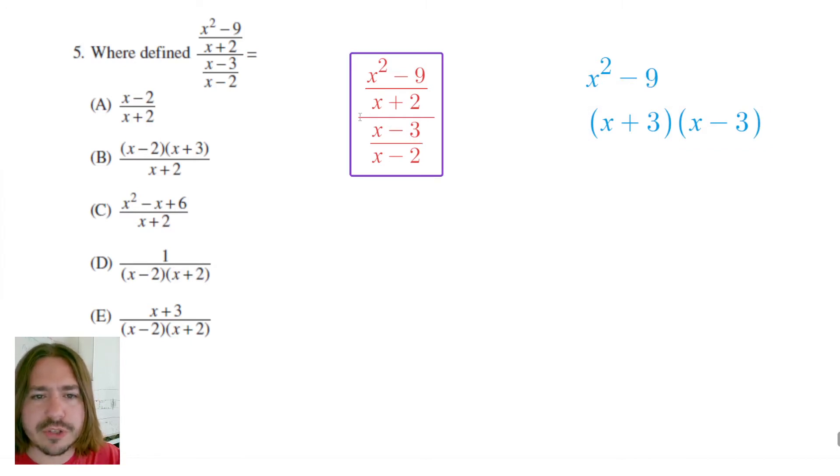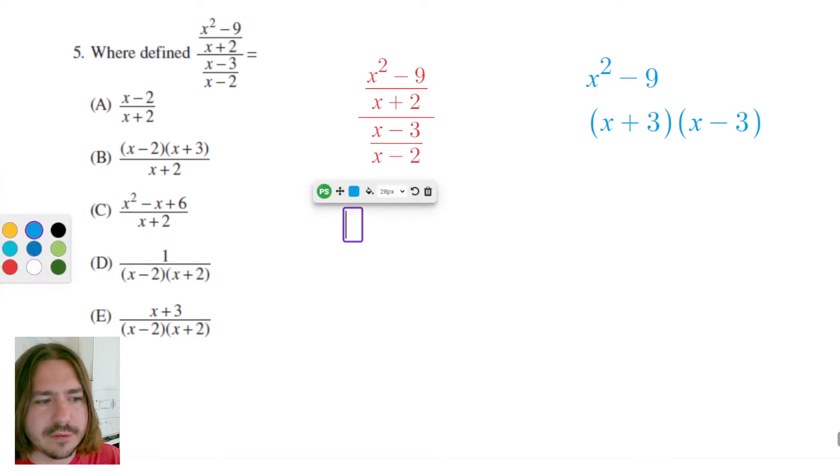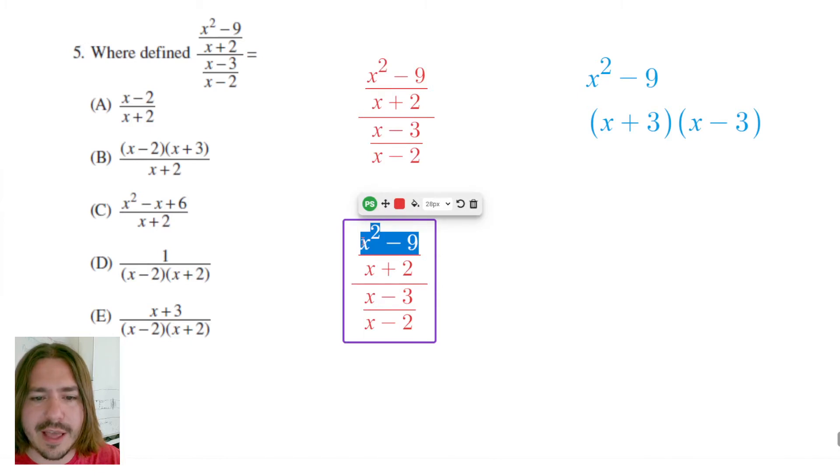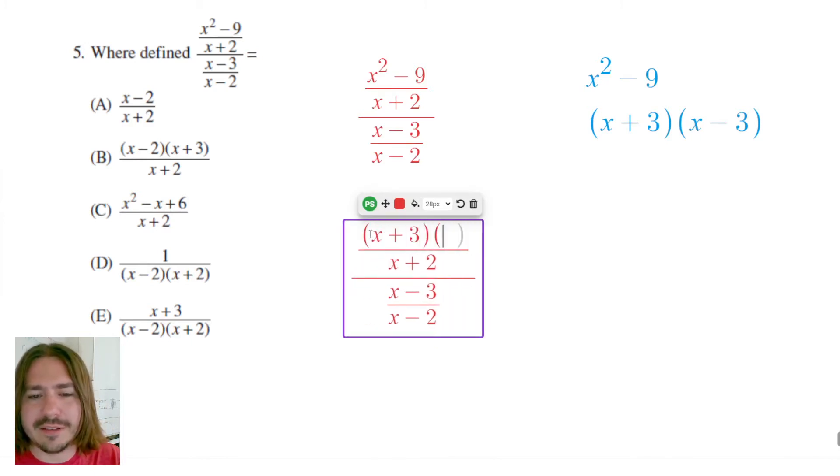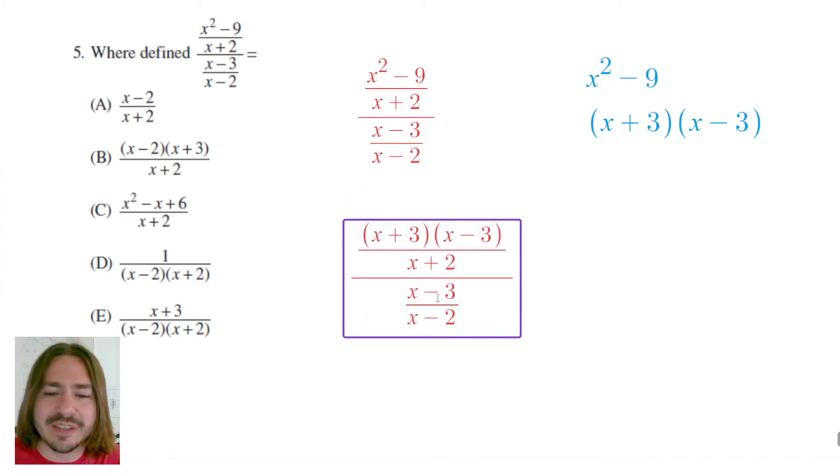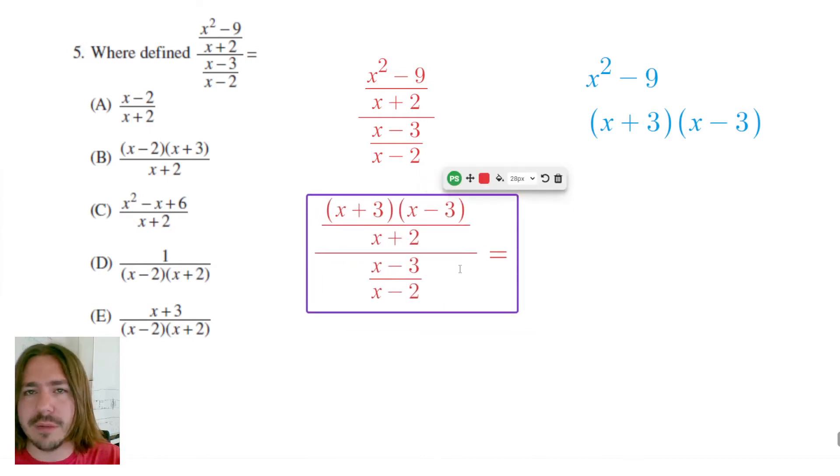I'm actually going to change that X squared minus 9 to X plus 3 times X minus 3. The reason why I'm going to do that is it's going to help me cancel things out once I rewrite this. Like I was saying earlier, I want to rewrite this as a multiplication problem.